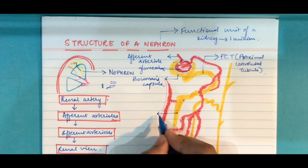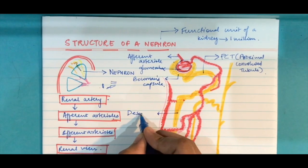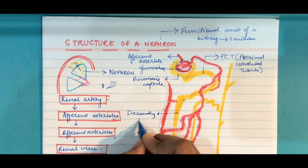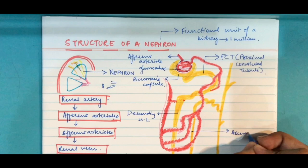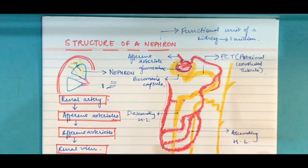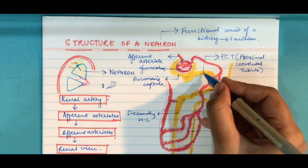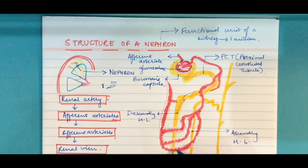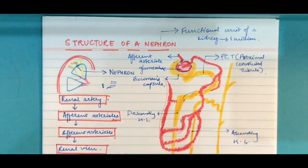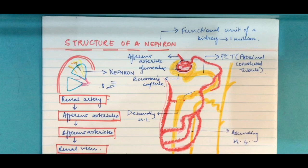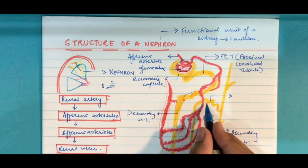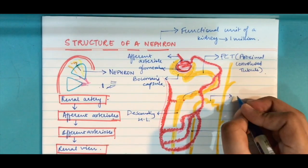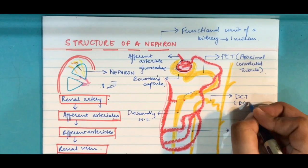This entire length of this entire yellow length you're seeing is known as Henley's loop. This entire length is the Henley's loop. This one is the descending Henley's loop and this one is the ascending Henley's loop. This part which you see at the end of Henley's loop which has the similar structure as PCT is DCT or distal convoluted tubule.